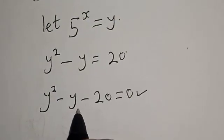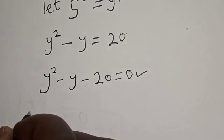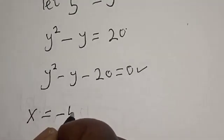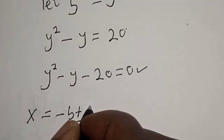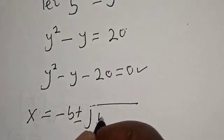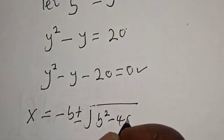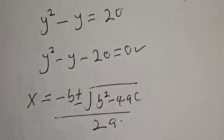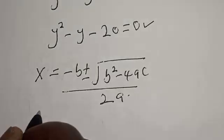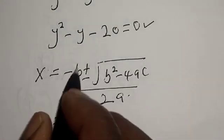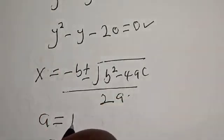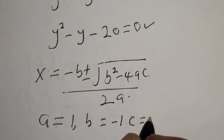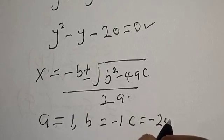This quadratic equation can be solved using the quadratic formula: x equals negative b plus or minus square root of b squared minus 4ac, all over 2a. From our equation, a equals 1, b equals negative 1, and c equals negative 20.